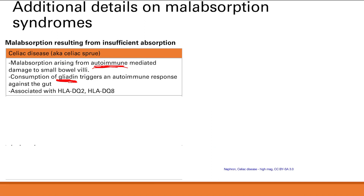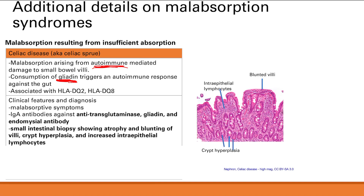Clinical features of celiac disease include the general malabsorptive symptoms: nutrient deficiencies, diarrhea, steatorrhea, bloating, nausea, and vomiting. Since this is an autoimmune condition, you will also see antibodies. In the gut, IgA antibodies are present, and the specific antibodies seen are anti-transglutaminase, anti-gliadin, and anti-endomysial antibodies — these must be memorized.